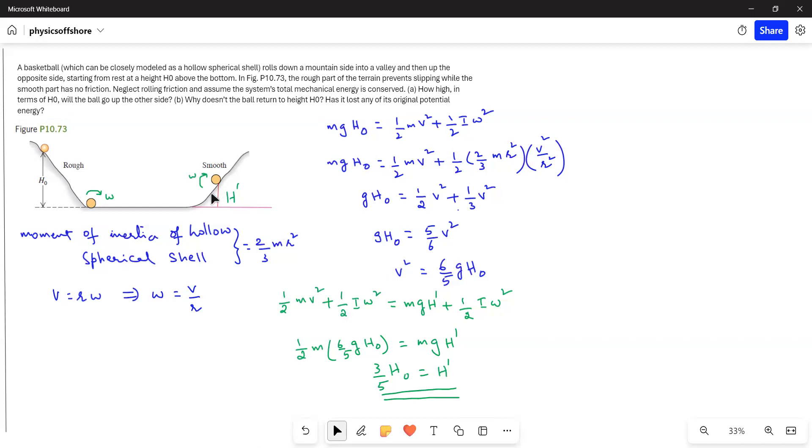And then here on the other side, the energy, even though there isn't any friction, we have less of the potential energy. So has it lost any of its original potential energy? It hasn't lost, but it has been converted into rotational kinetic energy. There isn't any loss here, only it gets converted into rotational kinetic energy. That is the answer for this.